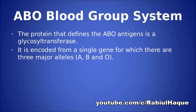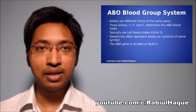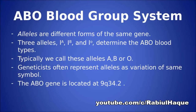The protein that defines the ABO antigen is a glycosyl transferase, encoded from a single gene for which there are three major alleles — these are different forms of the same gene. The three alleles, IA, IB, and IO, determine the ABO blood types, typically called A, B, or O. Geneticists often represent alleles as variations of the same symbol. Always remember, the ABO gene is located at chromosome number 9.